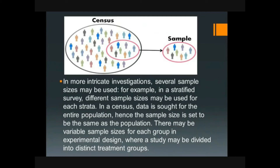In more intricate investigations, several sample sizes may be used. For example, in a stratified survey, different sample sizes may be used for each stratum. In a census, data is sought for the entire population; hence, the sample size is set to be the same as the population. There may also be variable sample sizes for each group in experimental design, where a study may be divided into distinct treatment groups.